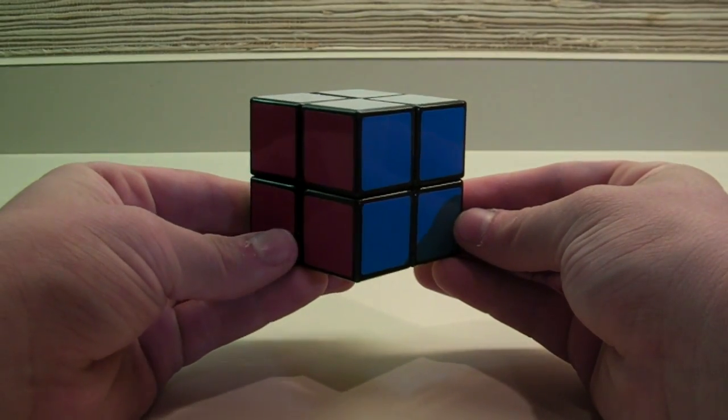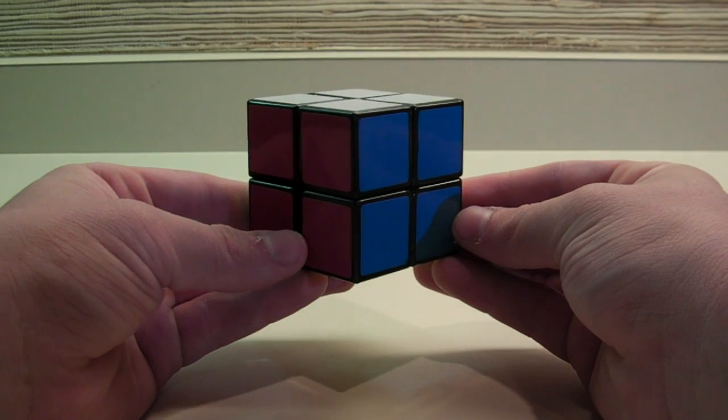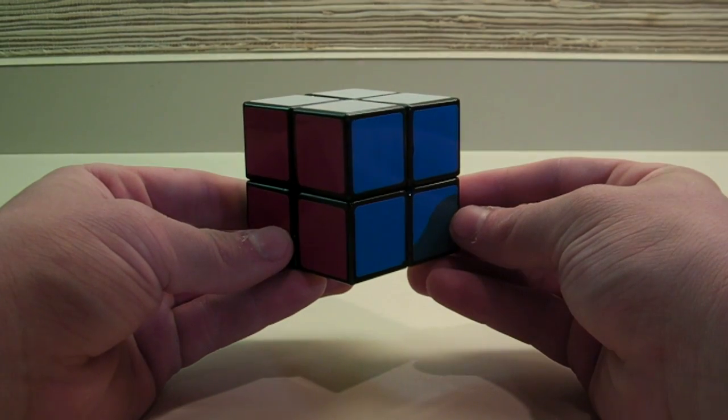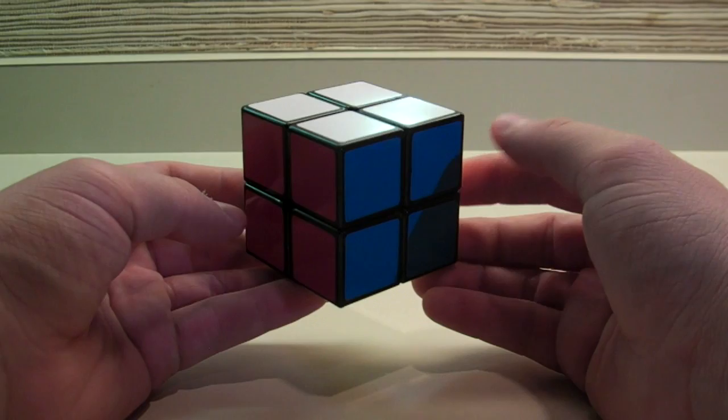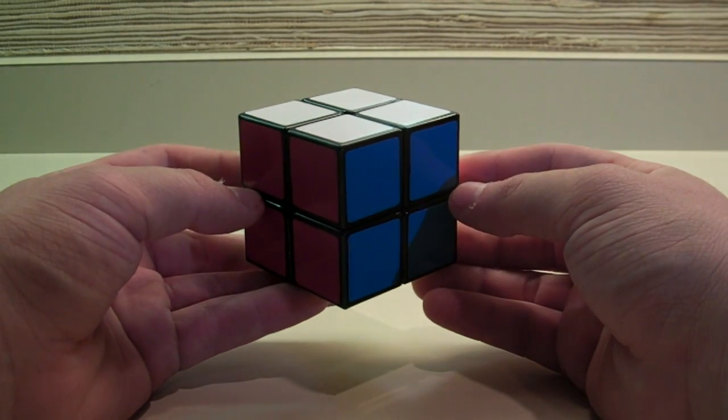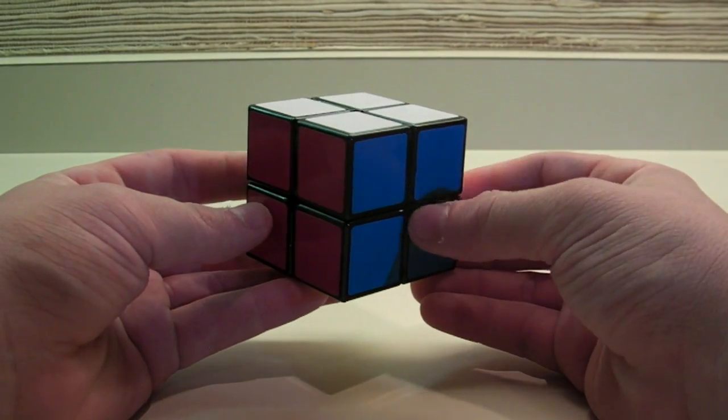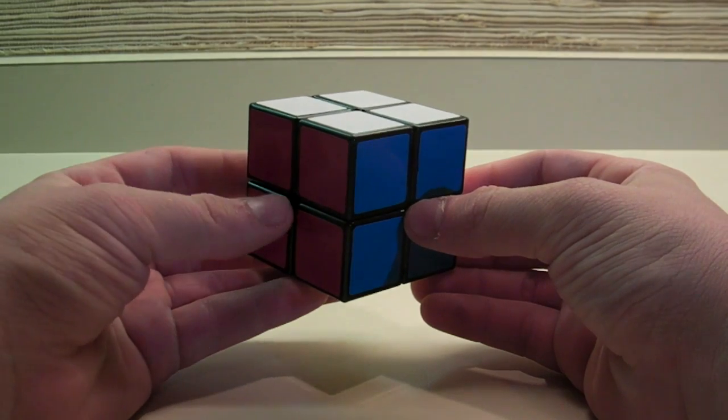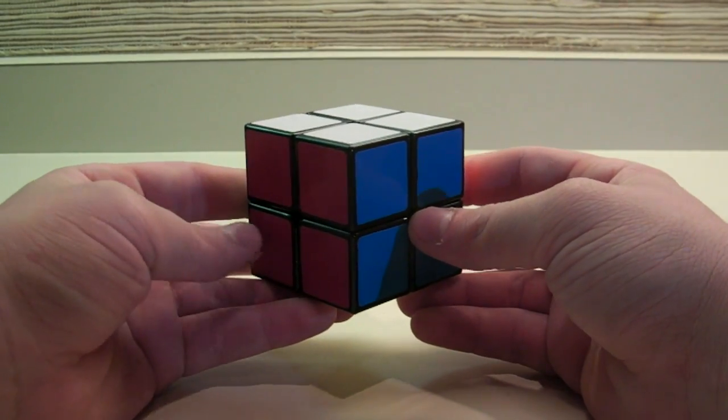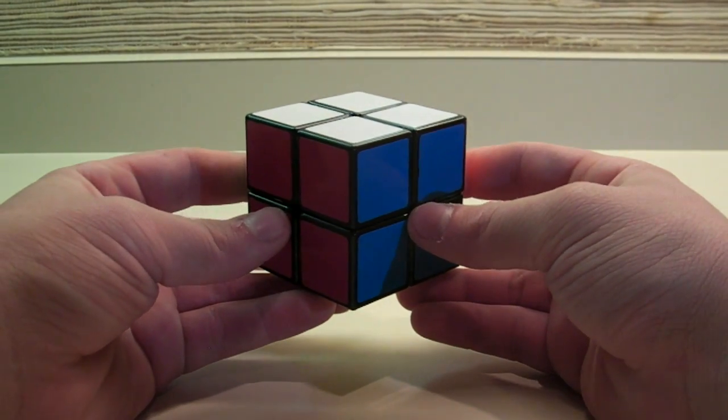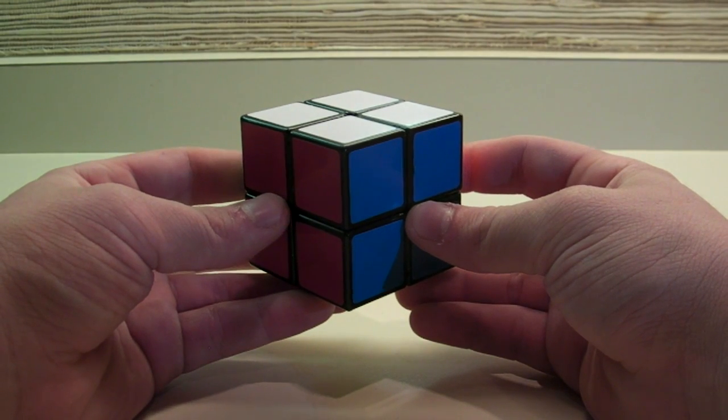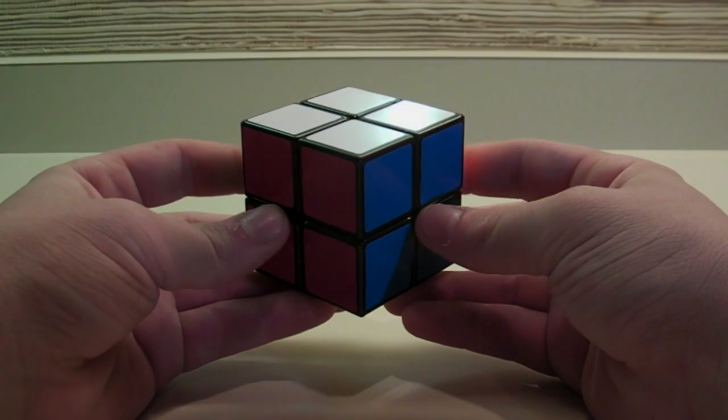Assuming that you already know 2-look OLL and 2-look PLL for the Friedrich method. Or, if you don't know either of those two sets of algorithms, learning them for this cube will also help you solve the Rubik's 3x3. With this method, I average about five seconds, so you should be able to do that as well, if not better. Here are a few example solves using this method.